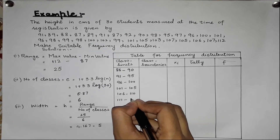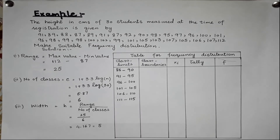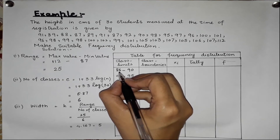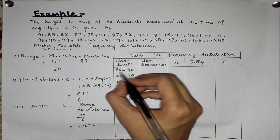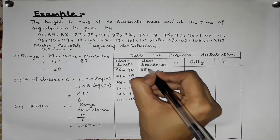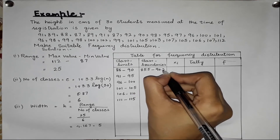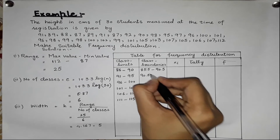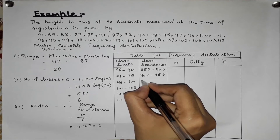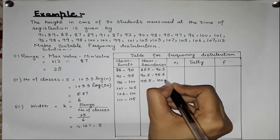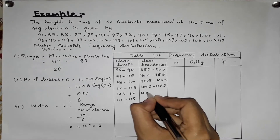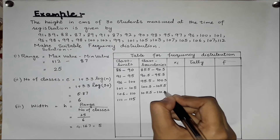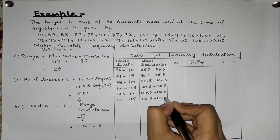Now we have to learn class boundaries. The lower class boundary is found by subtracting 0.5 from the lower class limit, and the upper class boundary is found by adding 0.5 to the upper class limit. So the boundaries are: 85.5–90.5, 90.5–95.5, 95.5–100.5, 100.5–105.5, 105.5–110.5, and 110.5–115.5.